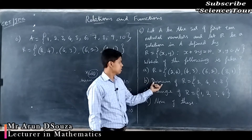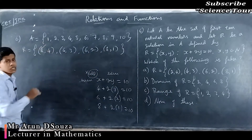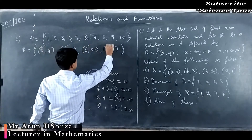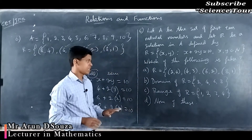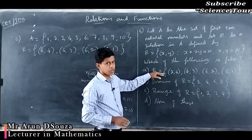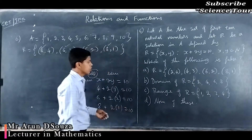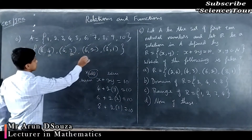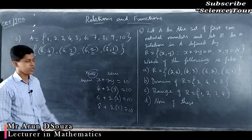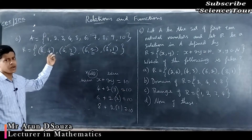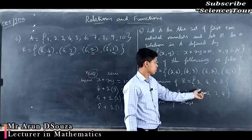Why can't B be the answer? Domain is the set of first elements of the ordered pairs: {2, 4, 6, 8} — that is correct. Range is the set of second elements: {4, 3, 2, 1} = {1, 2, 3, 4} — that is also correct. Order does not matter when writing a set, and you should not repeat elements.